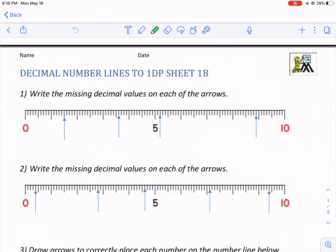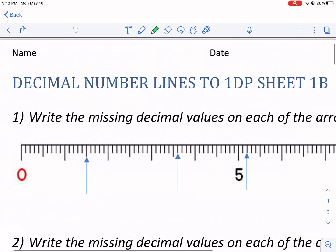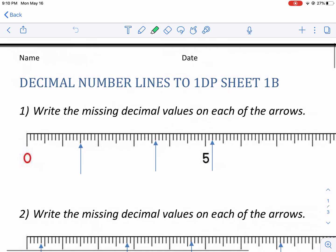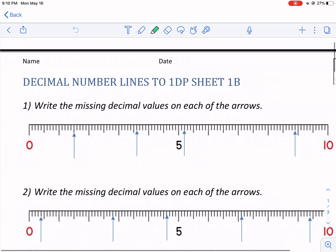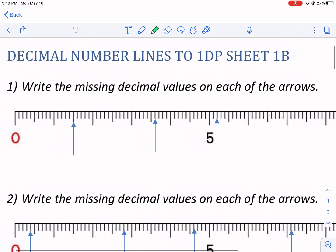Hi everyone, this is Mr. West. You're watching a Math Salamanders video, this one on decimal number lines to 1DP sheet 1B. Not sure what all that means, but all I know is we're gonna be finding out the decimal place on these number lines.